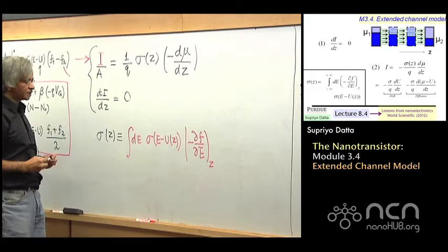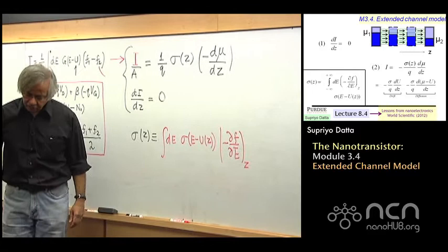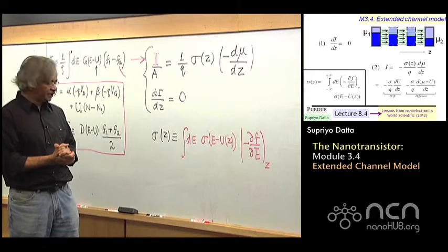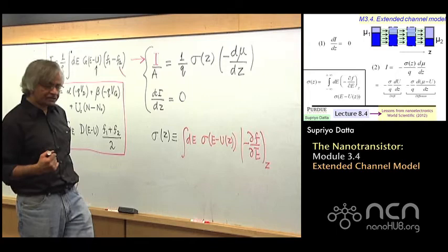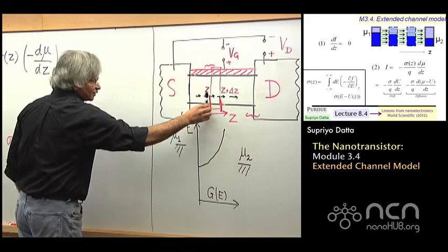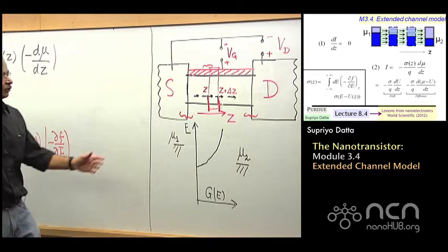So this is the set of equations that one would use to analyze a longer device — the one where you go beyond the point-channel model. The key point is that in getting from here to there inside the channel, I ignored the interface resistance associated with these points, because interface resistance only would appear at the ends.